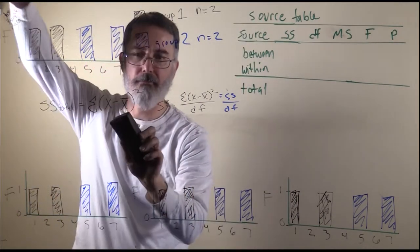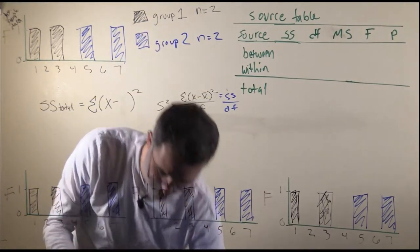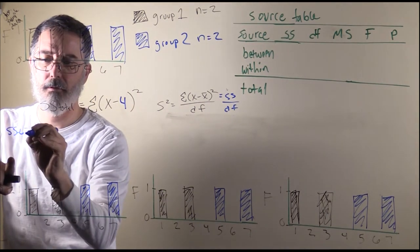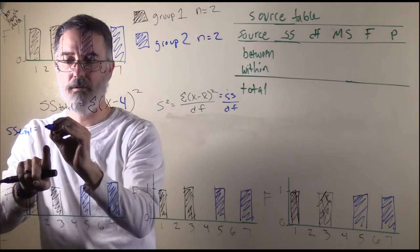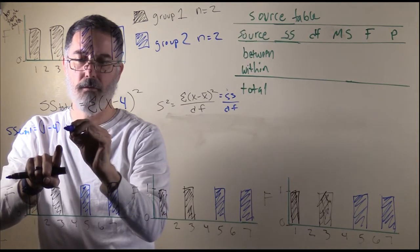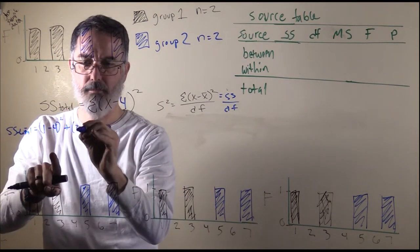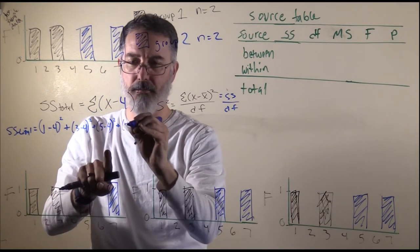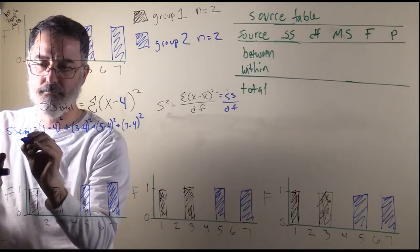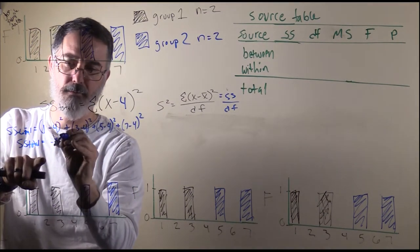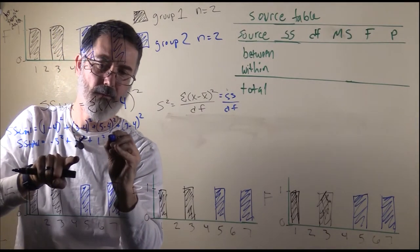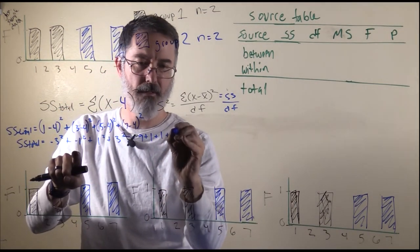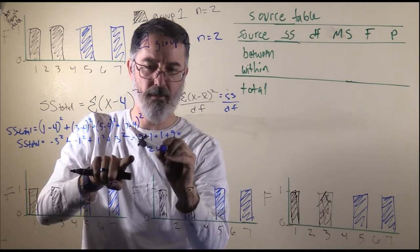So the grand mean of 4 goes into our formula. Sums of squares total equals: 1 minus the grand mean squared, plus 3 minus the grand mean squared, plus 5 minus the grand mean squared, plus 7 minus the grand mean squared. That gives us negative 3 squared plus negative 1 squared plus 1 squared plus 3 squared, which is 9 plus 1 plus 1 plus 9. So our sums of squares total is going to be 20.